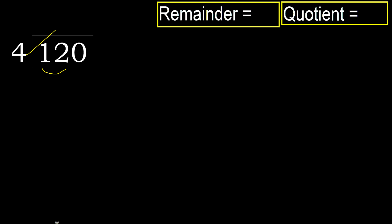4 multiplied by which number is nearest to 12, but not greater? 4 multiplied by 4 is 16, which is greater. 4 multiplied by 3 is 12, which is not greater. 12 minus 12 equals 0.